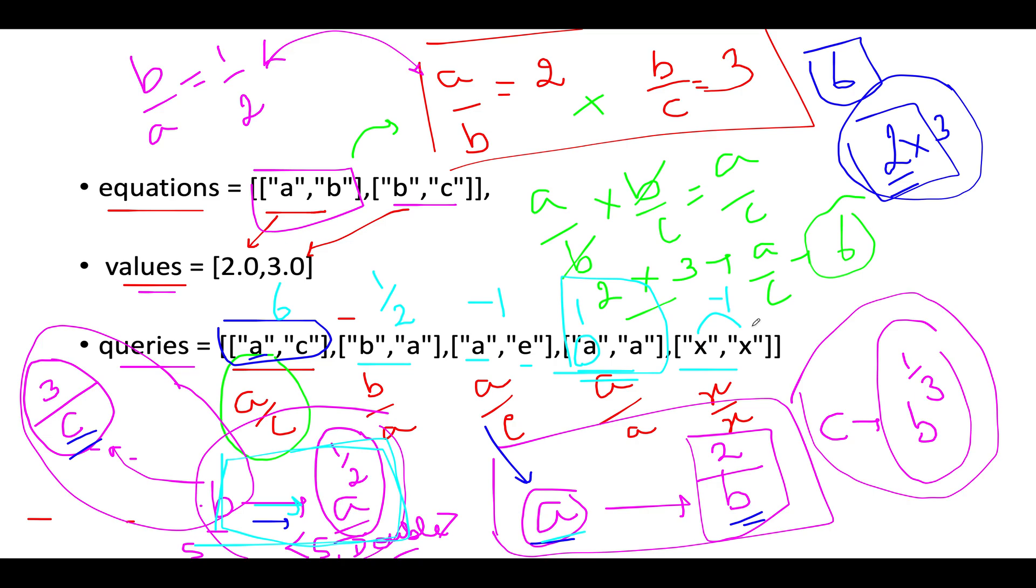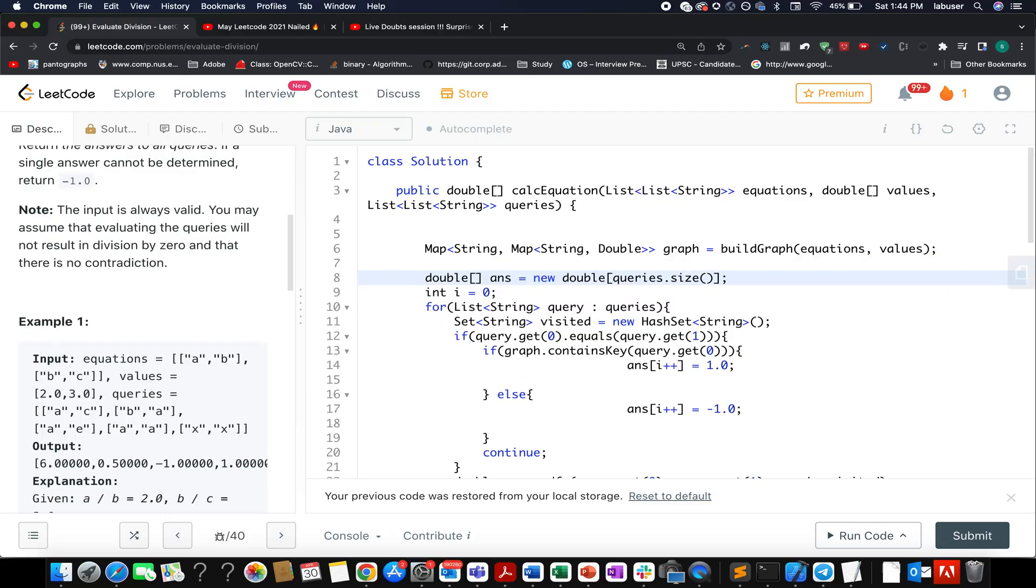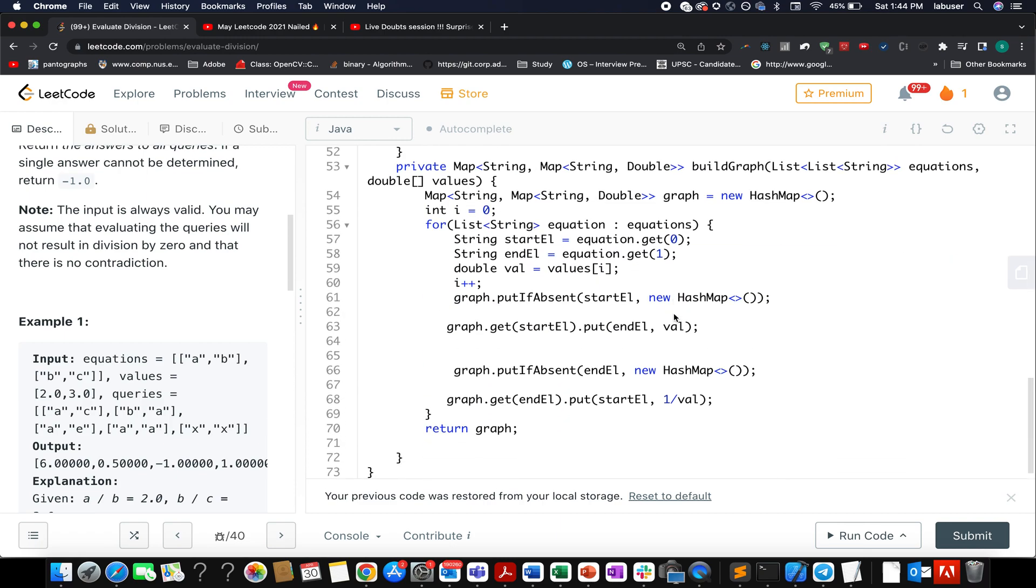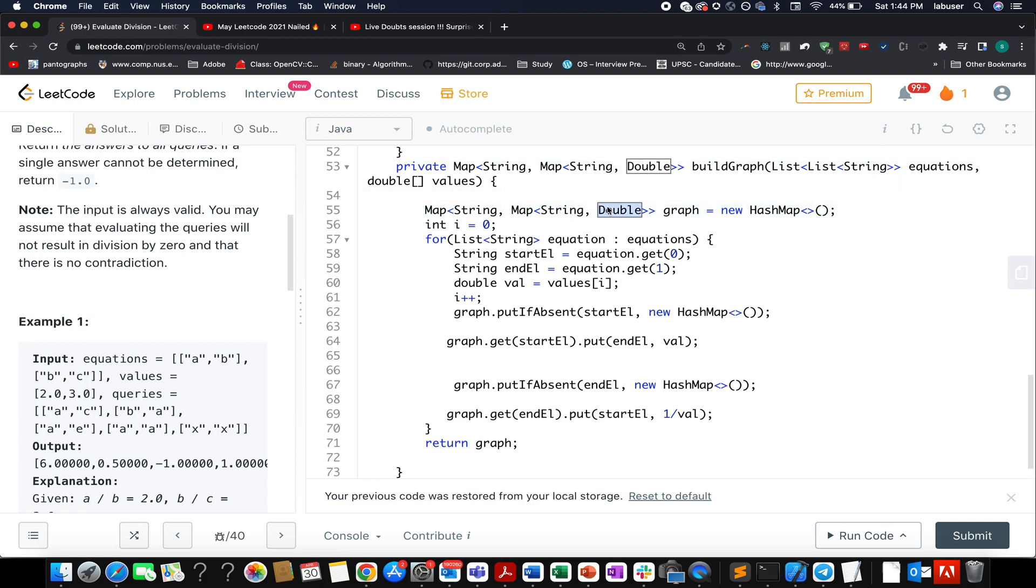Let's walk through the coding section. I'll follow the same steps I just talked about. The first thing I've done is build the graph using the equations and values array. Let's walk through the buildGraph helper method. BuildGraph is simple. You create a graph where the key is string and the value is a map of type string comma double. This signifies the target and the value we extract from the values array.